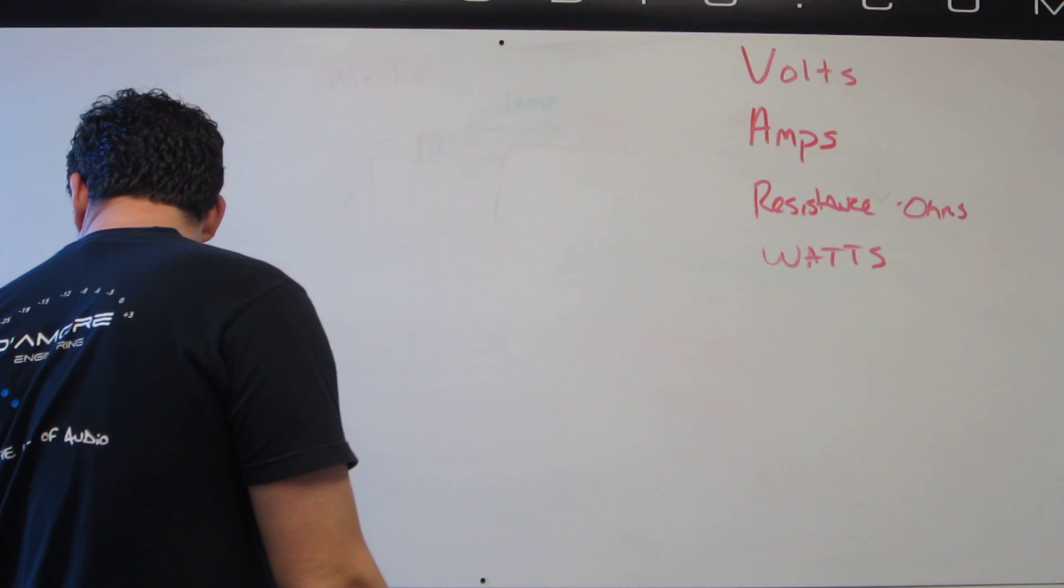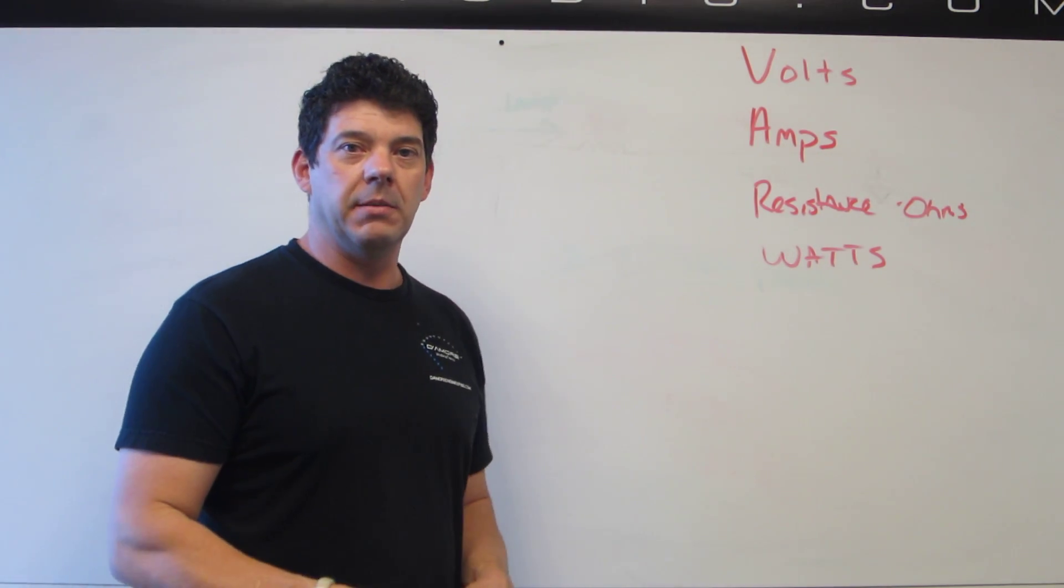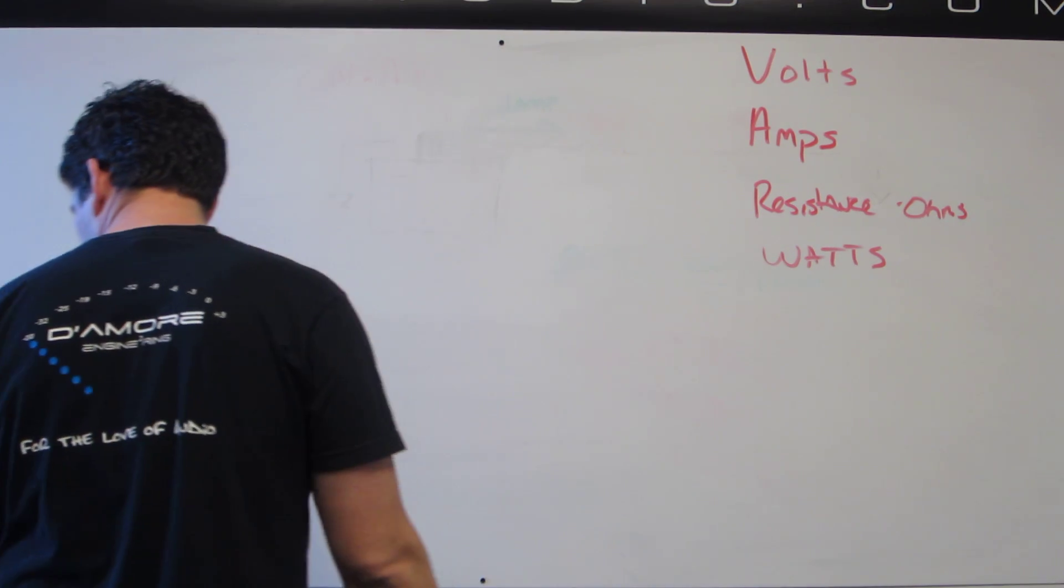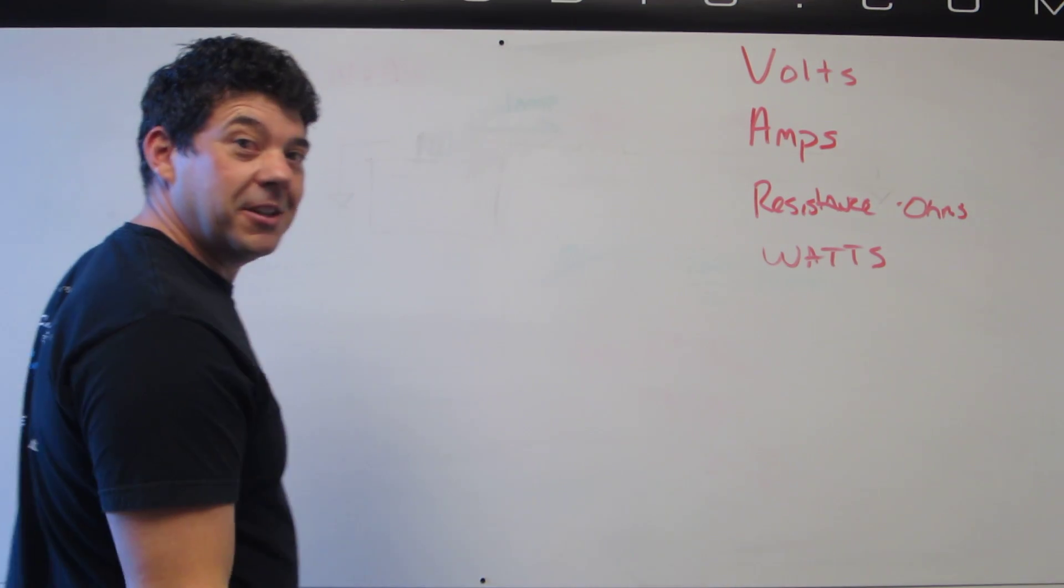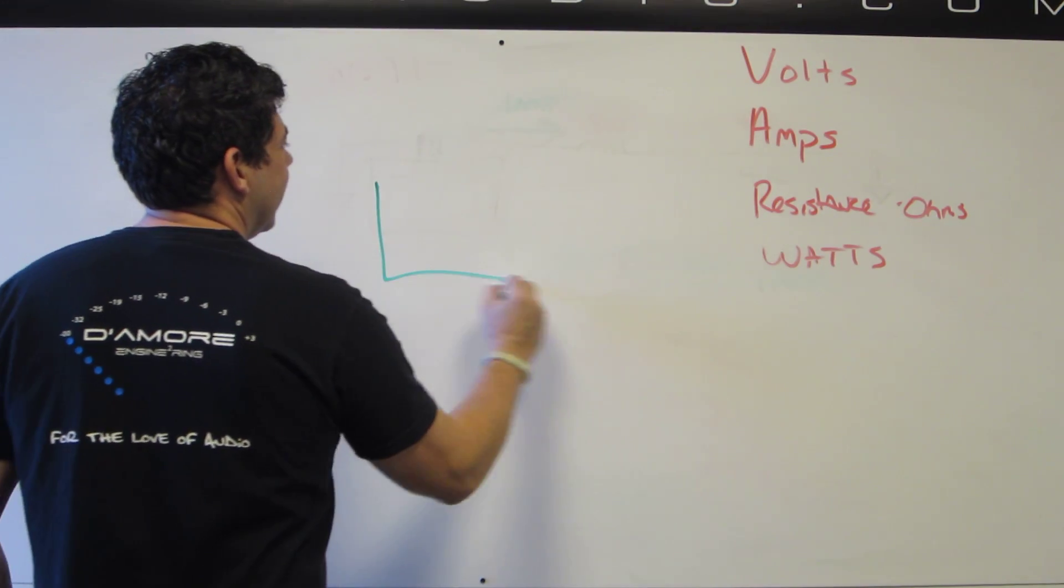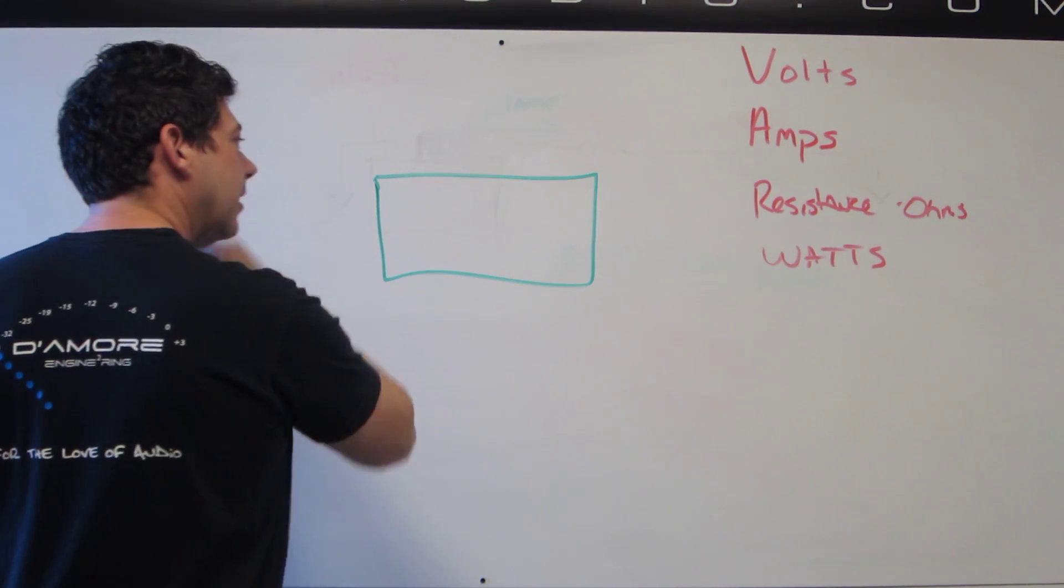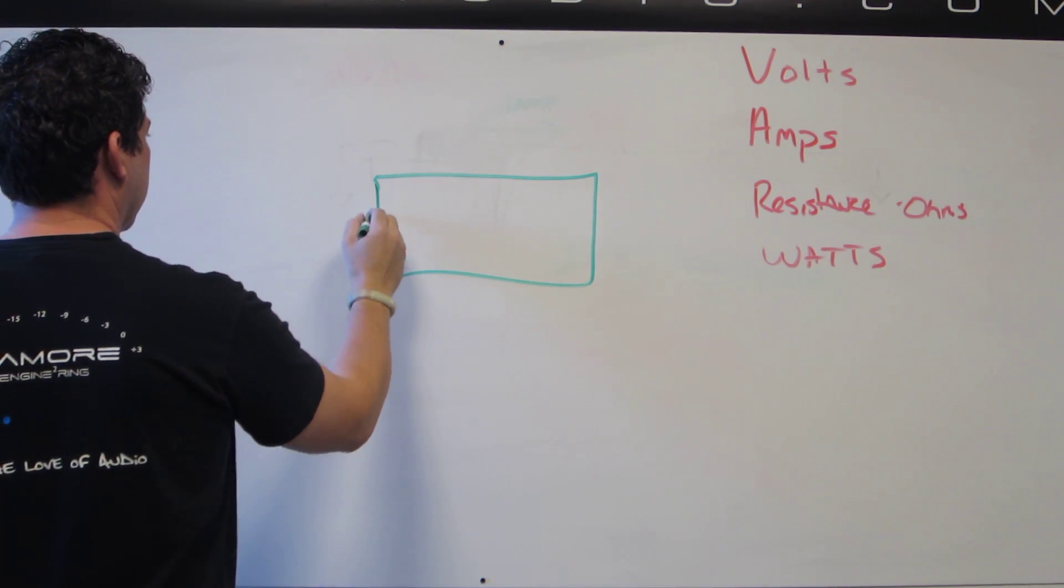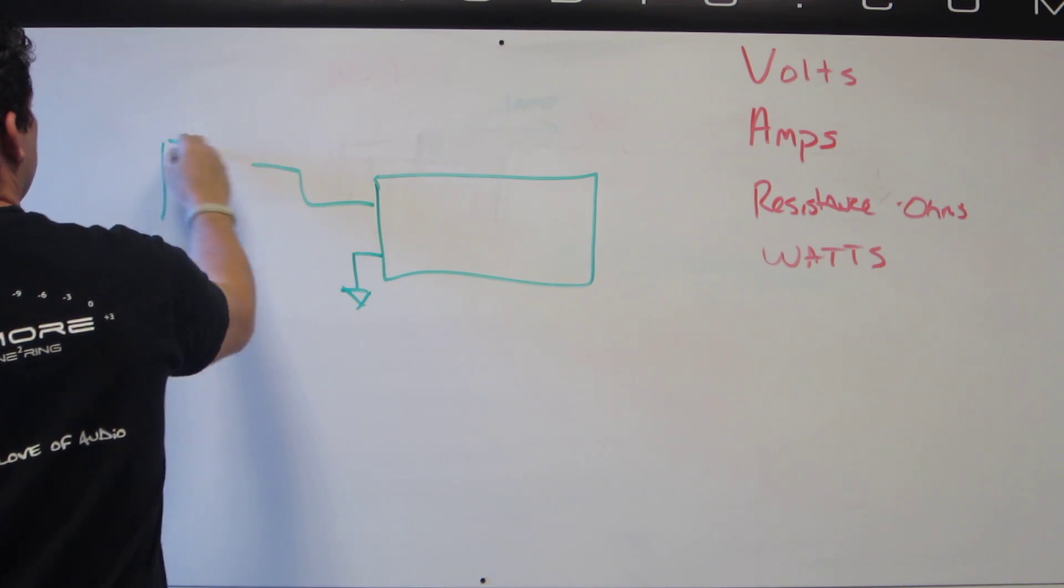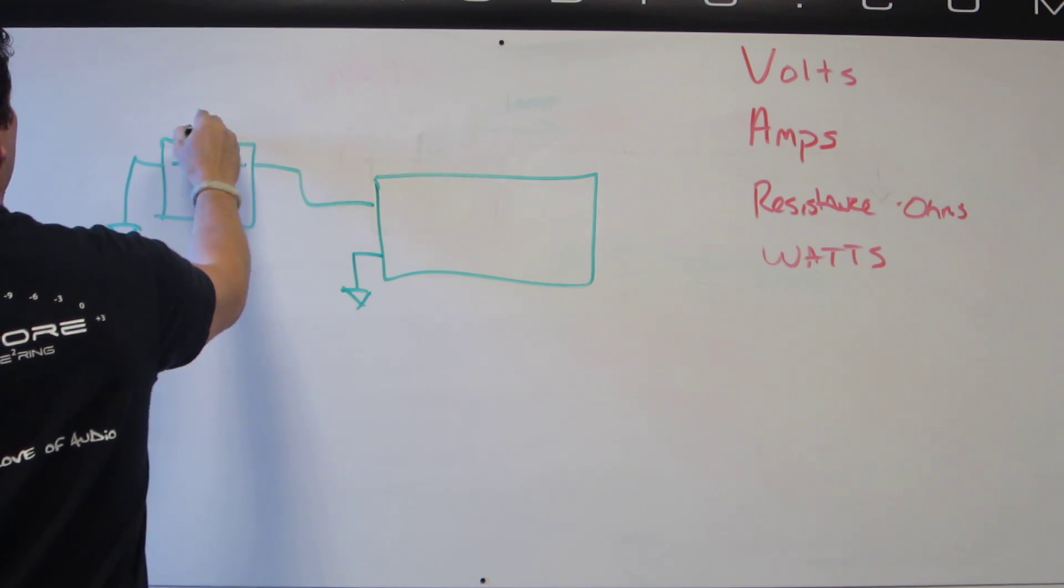The efficiency of something is how much power is going in versus how much power is coming out of it. In a perfect world everything will be 100% efficient, and healthcare will be cheap, but that's not happening. So here's our amplifier, and here's our connections to our car. Here's the ground, here's our battery, 12 volt battery.